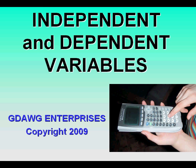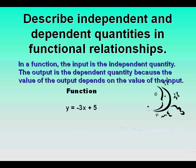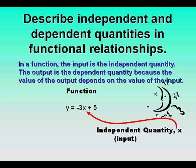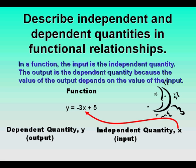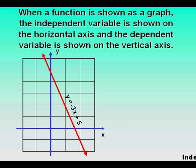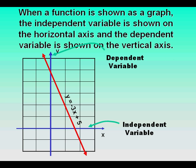Independent and dependent variables. In a function, the input is the independent quantity and the output is the dependent quantity, because the value of the output depends on the value of the input. Here we have the independent quantity x and the dependent quantity y. When a function is shown as a graph, the independent variable is shown on the horizontal axis and the dependent variable is shown on the vertical axis.